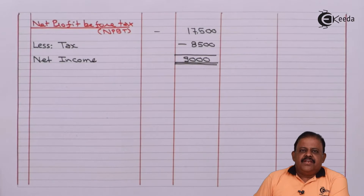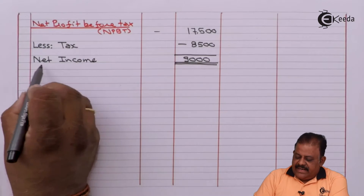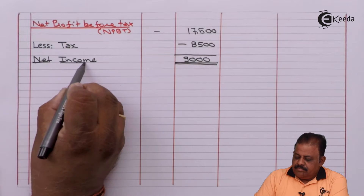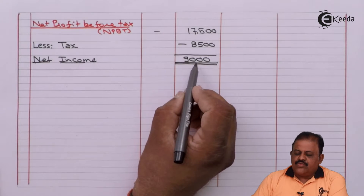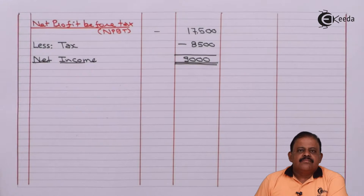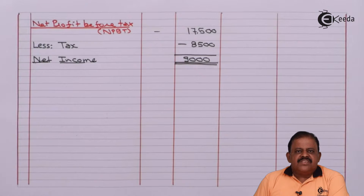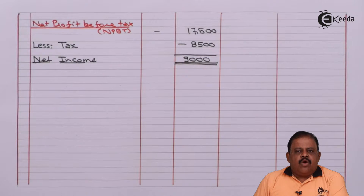Finally, we have net income of 9,000. We have completed the vertical income statement. Let us now prepare the common size income statement.